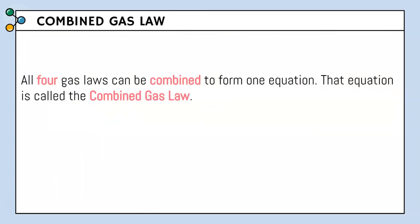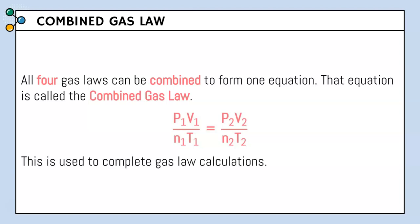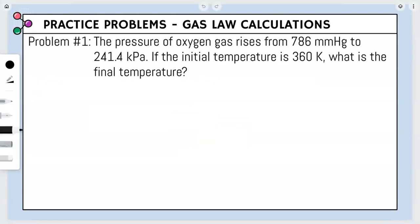All four gas laws can be combined to form one equation called the Combined Gas Law: P1V1 over N1T1 equals P2V2 over N2T2. This can be used to complete gas law calculations, and it will be given to you on any assessment — you don't need to memorize it.